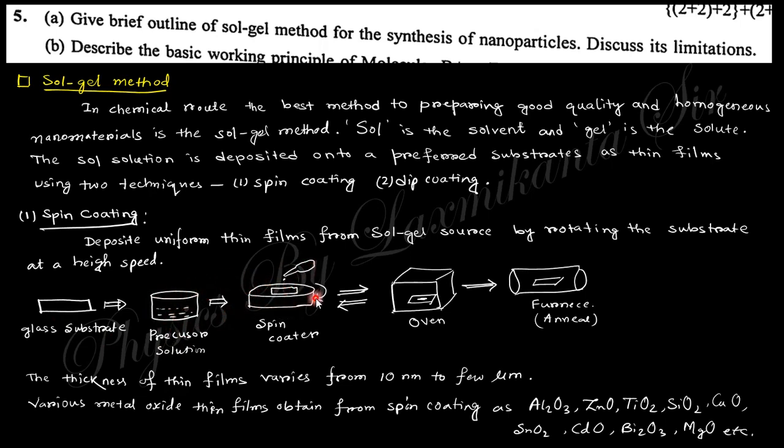The substrate holder is spinning, and if you drop this precursor solution drop by drop on the substrate, then take it in an oven and heat it up. Again drop and oven, multiple times it will be repeated. Finally, the substrate will be annealed by the furnace. So this is the total process for spin coating.